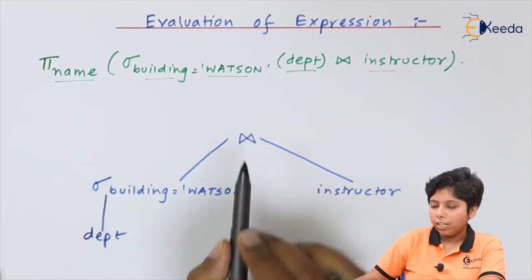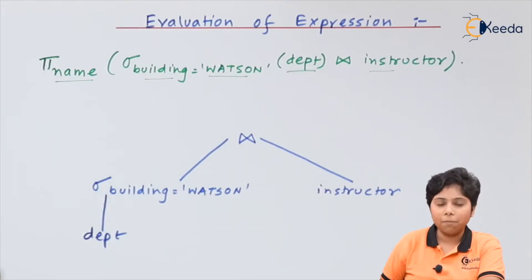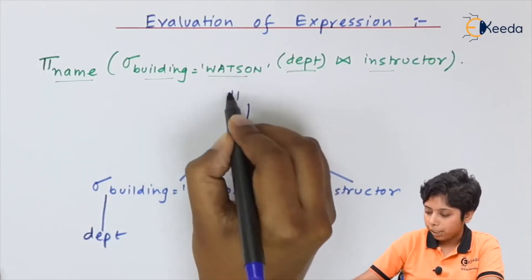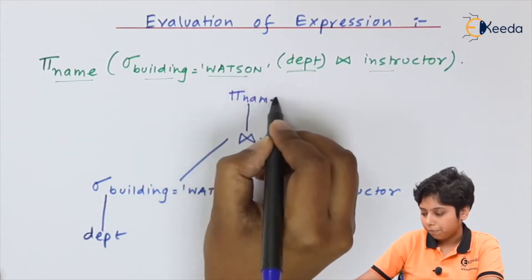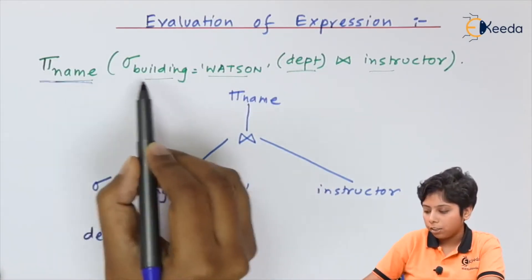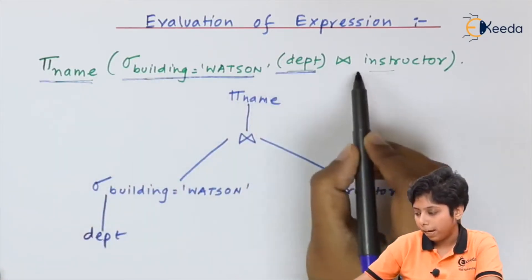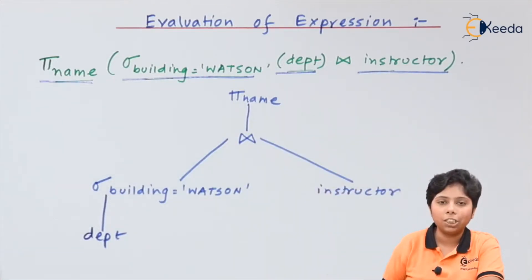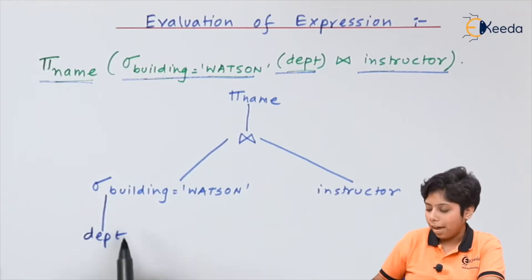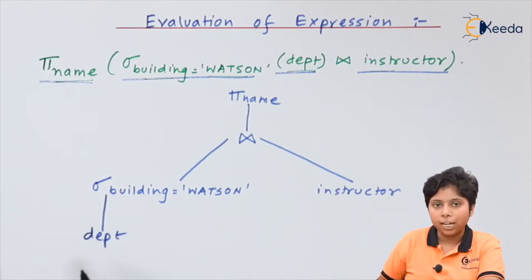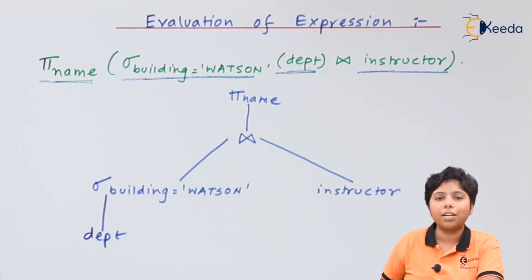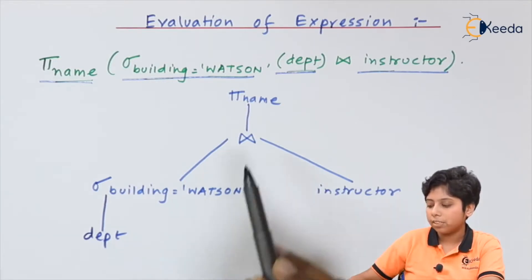From this join result, we project the name as the final result. So the final result consists of projecting the name. We have divided this into one, two, three, and four parts — this is the materialization of a particular query, so that if there is any fault or discrepancy at any level we can identify which level has the issue and optimize at that level.